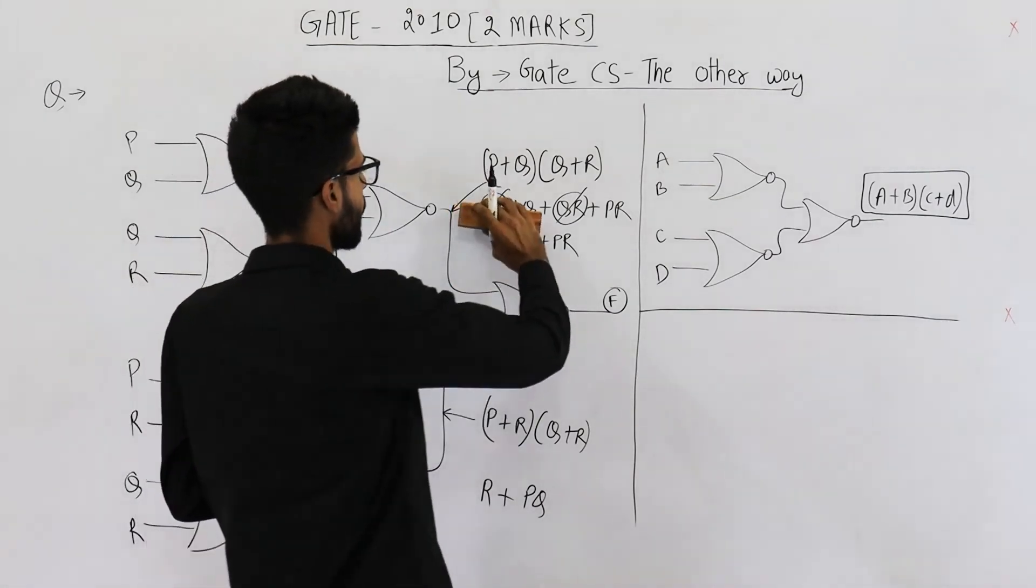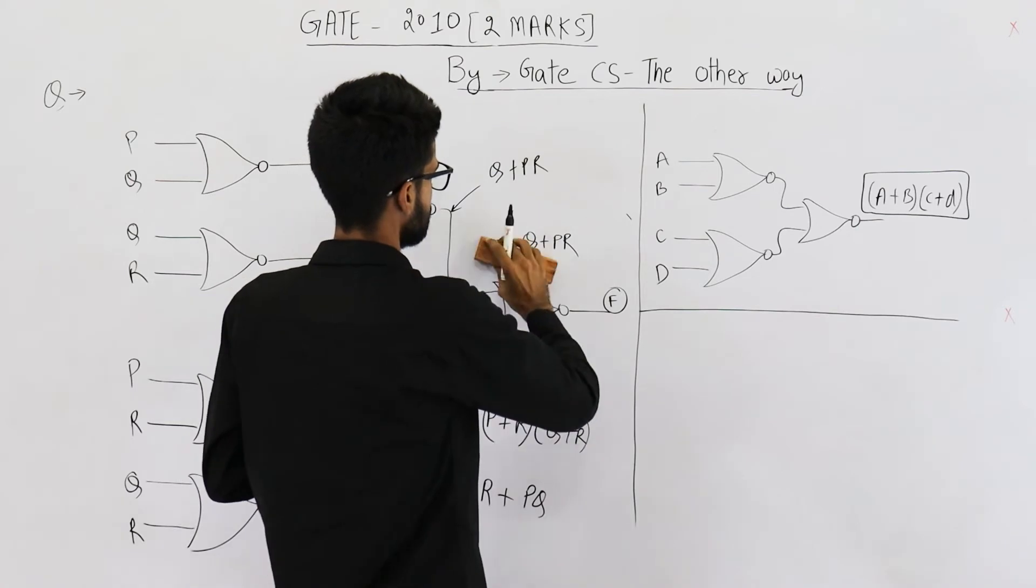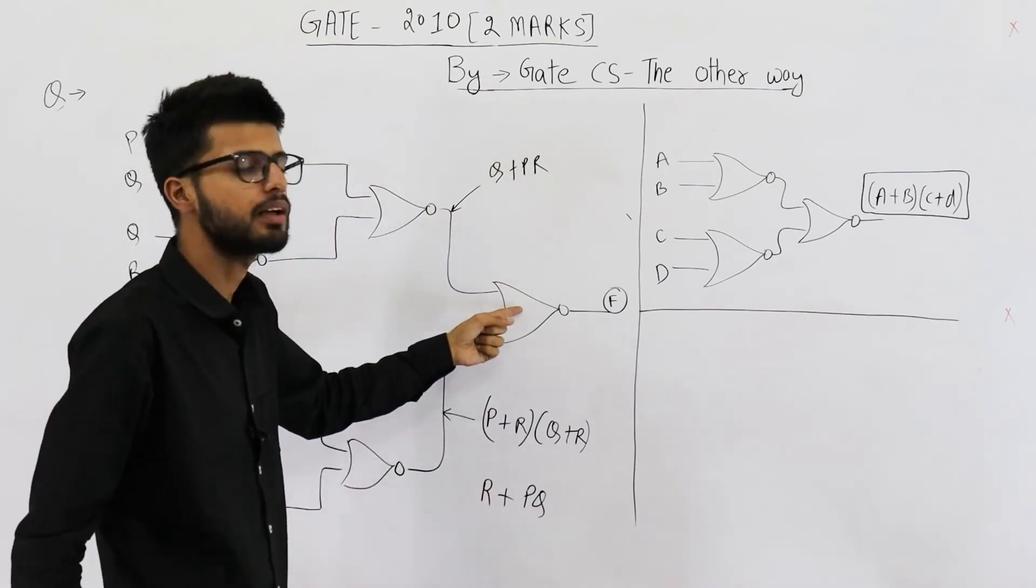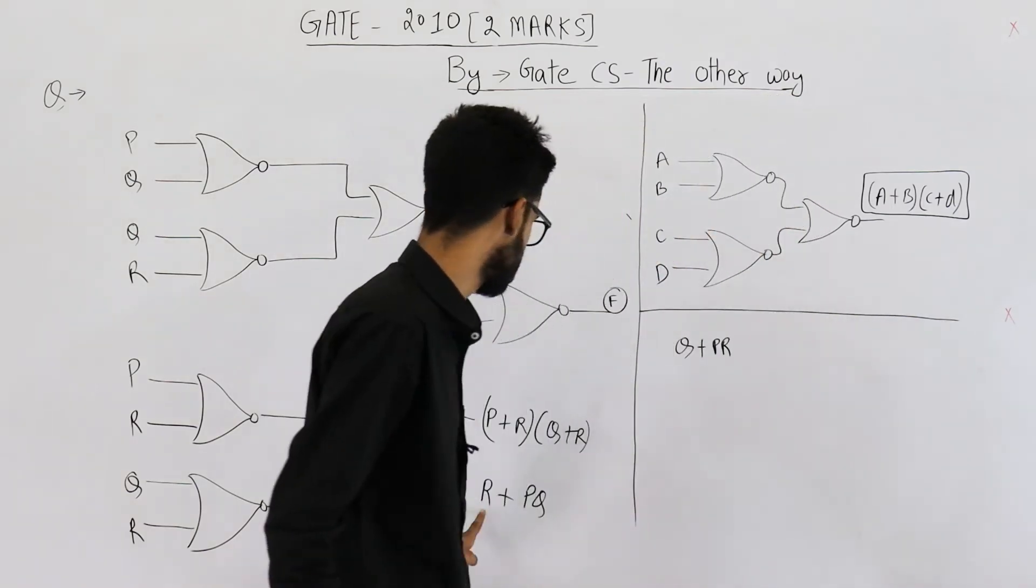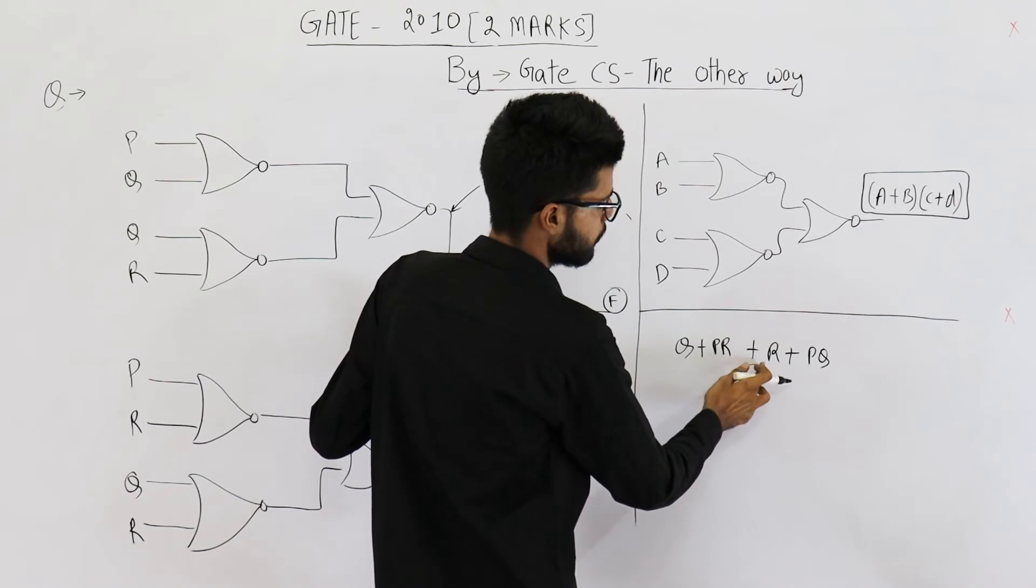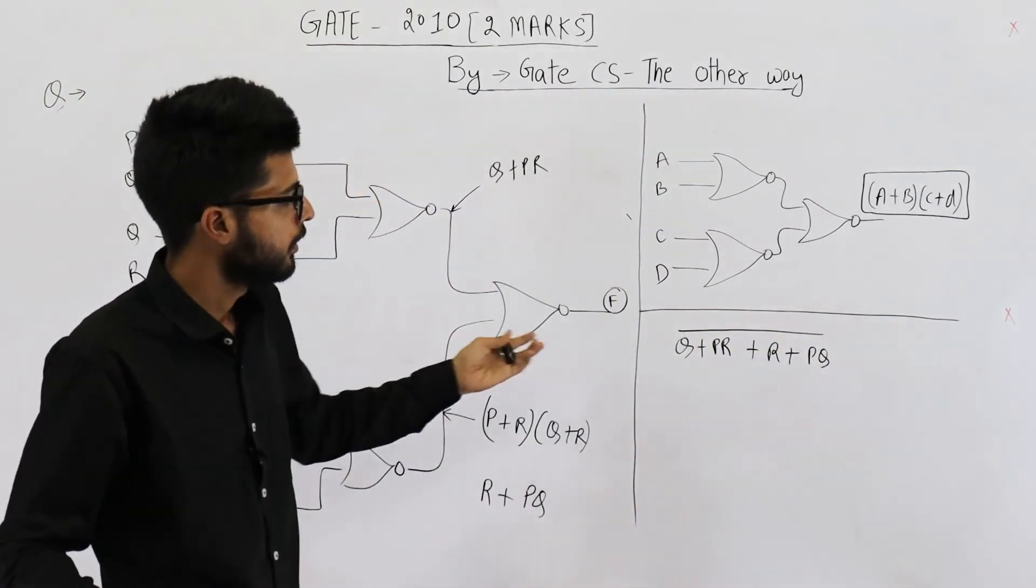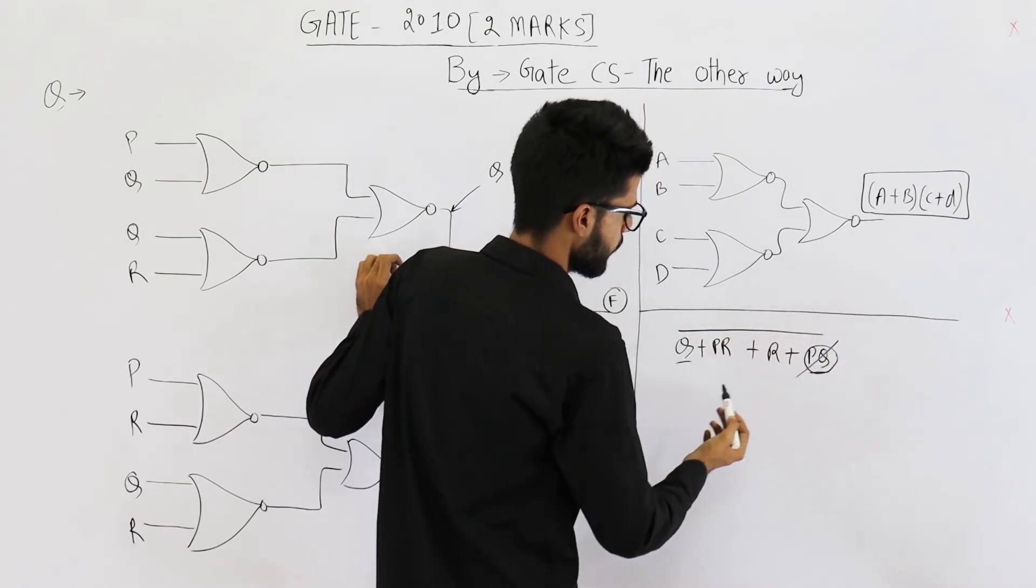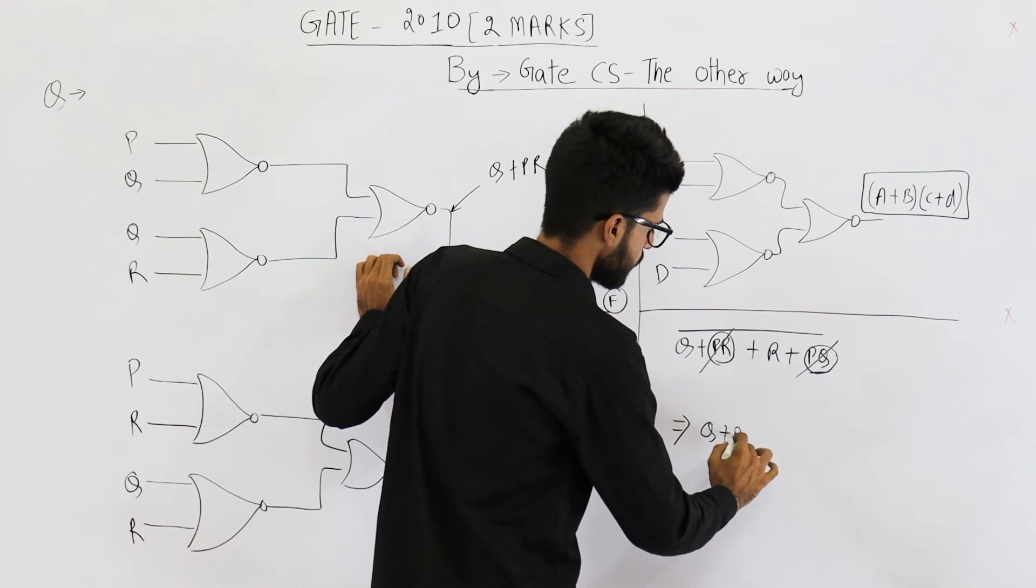Now we know that first input of this gate is Q plus PR. Second input is R plus PQ. We are taking NOR of these two. Let's determine NOR of these two. It is Q plus PR and the second one is R plus PQ. So by using this plus symbol between these two, we have taken OR, but we want NOR. So just complement all this because complement of OR is NOR. Now we can solve it. You can see here also absorption law is applicable Q plus PQ. So this PQ is redundant. R plus PR, so this PR is redundant. That means the output is Q plus R whole complement.